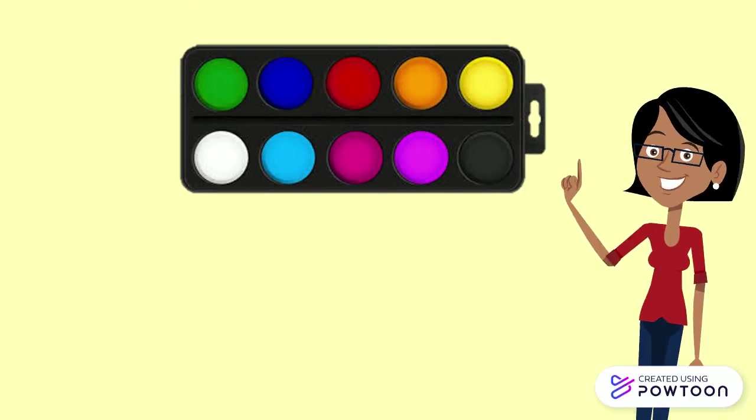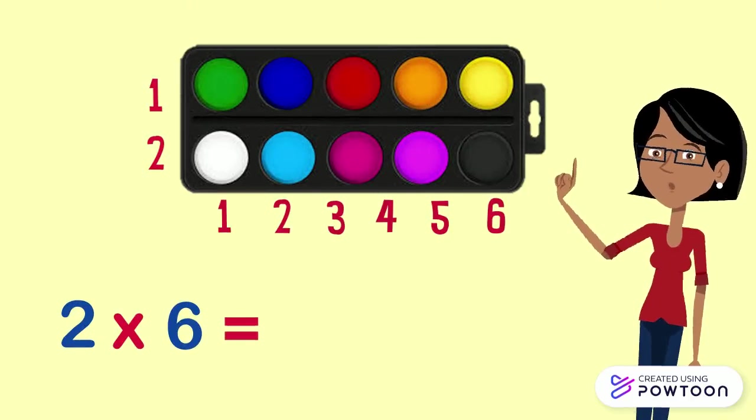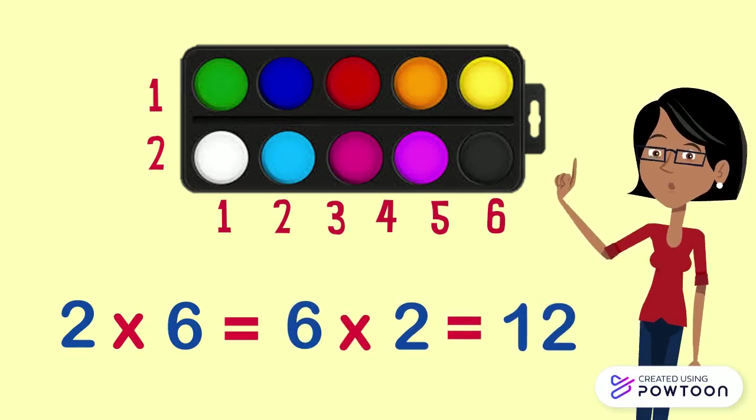To know the number of colors in this paint box, we multiply 2 by 6 or 6 by 2, which is equal to 12. So there are 12 colors in this box.